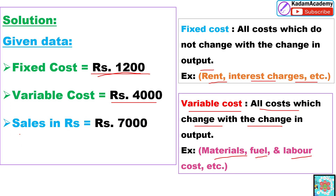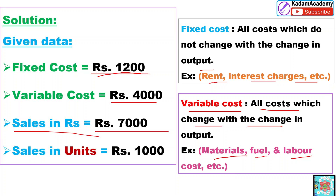Next, sales in rupees — that means whatever production was done, the total sales for that period is 7,000 rupees. And sales in units is given as 1,000 units. Don't worry, this is a very simple numerical and we'll solve it within five minutes.